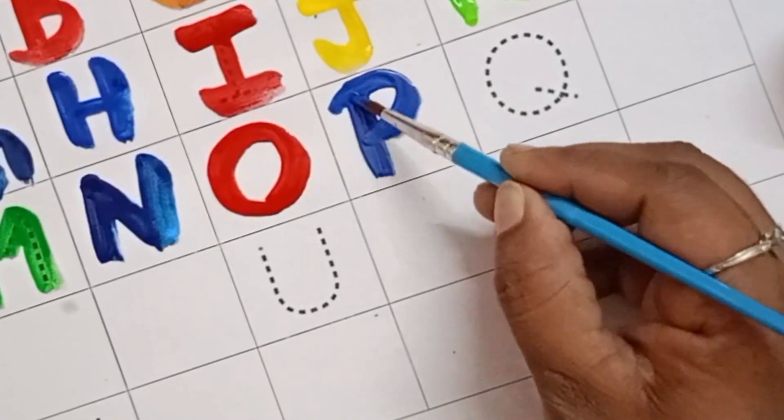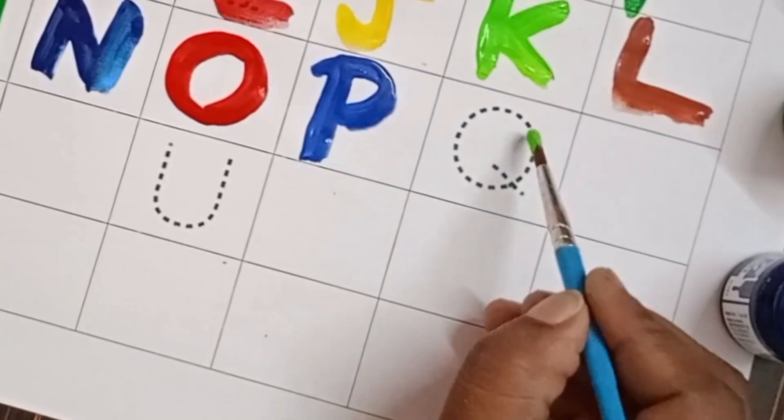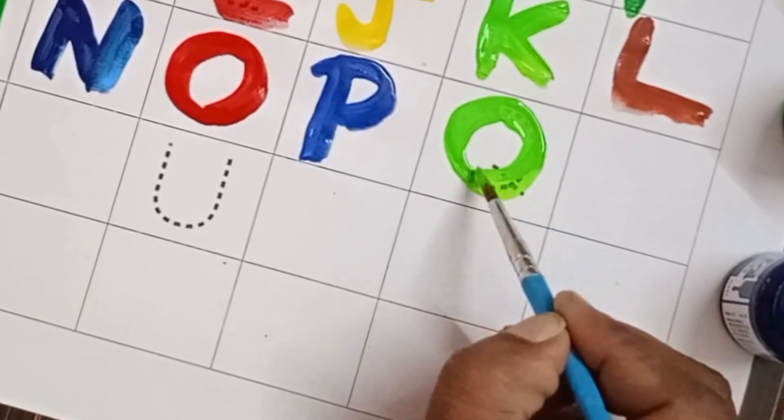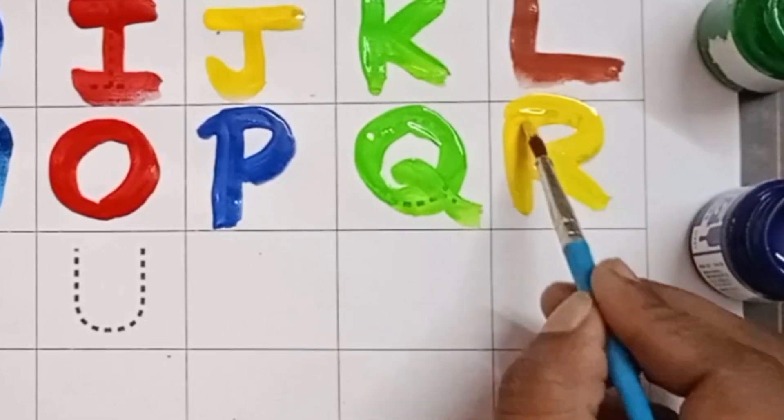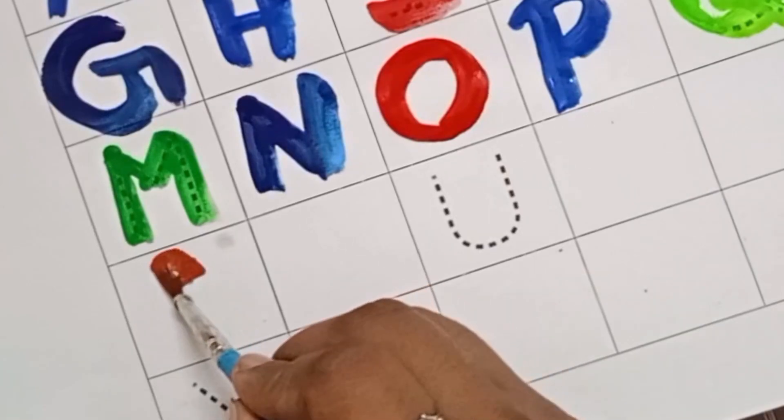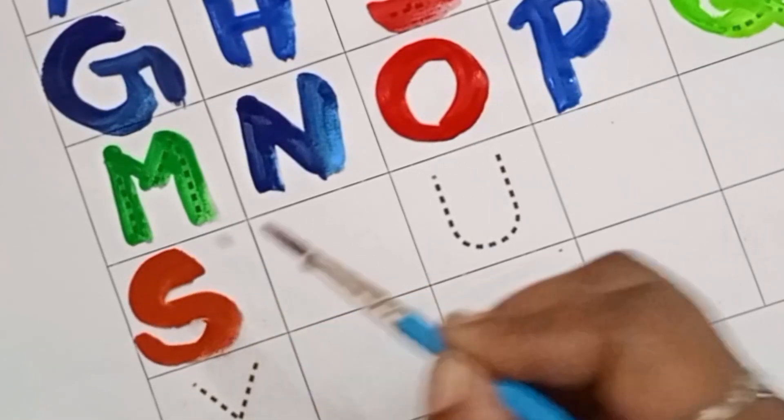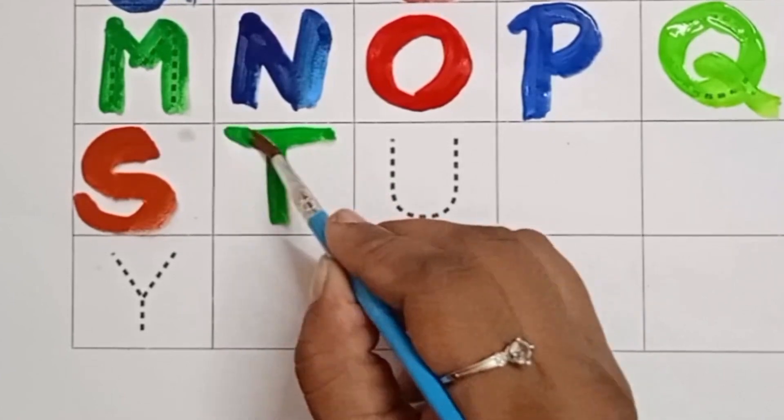P. P for parrot. Q. Q for queen. R. R for rabbit. S. S for snake. T. T for tortoise.